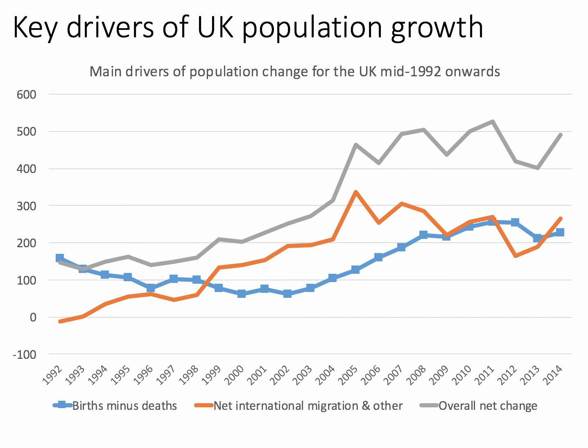The second key driver of population growth is net international migration. You can see from the orange line in the UK chart that net migration into the UK has been quite strongly positive, certainly over the last 10 years. Adding the two together — shown by the grey line — the UK population has been growing in excess of 400,000 people per year since 2005, rising above 500,000 in some of those years.